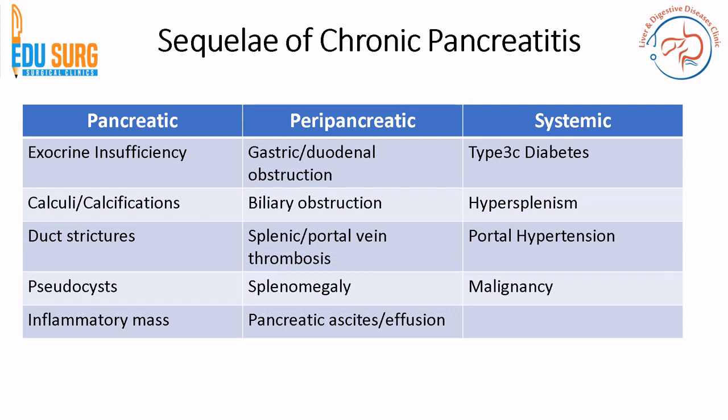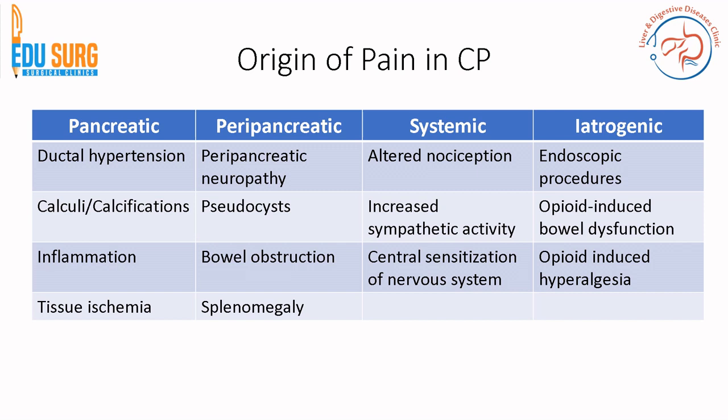The cardinal symptom of chronic pancreatitis is pain, and its origin can be pancreatic, peripancreatic, systemic, or iatrogenic. Iatrogenic causes are particularly important because they are avoidable — patients undergoing multiple endoscopic procedures often experience ever-present, intensifying pain. Opioid-induced bowel dysfunction and opioid-induced hyperalgesia also contribute. Additional factors include altered nociception and central sensitization of the nervous system.